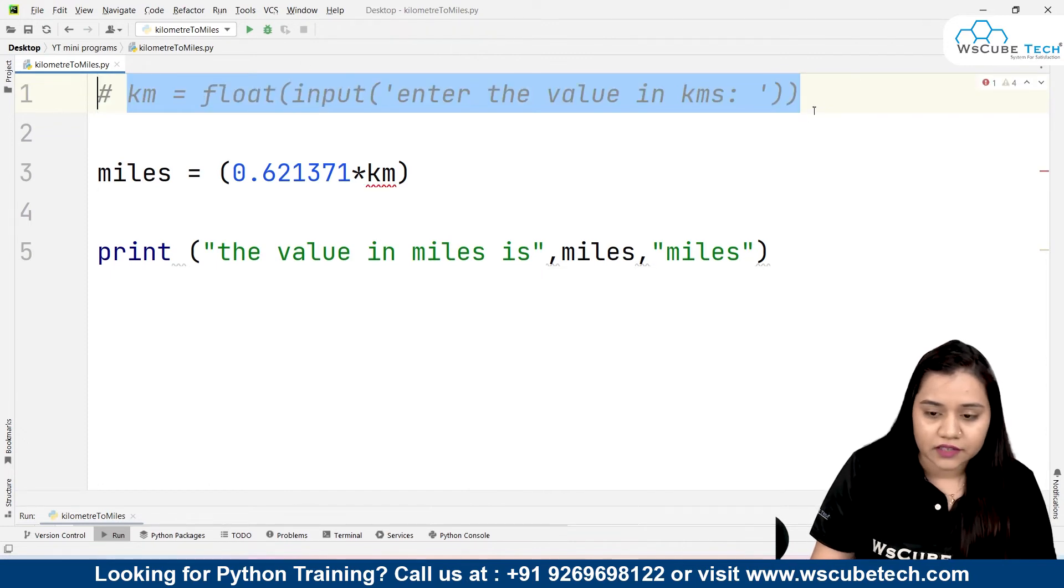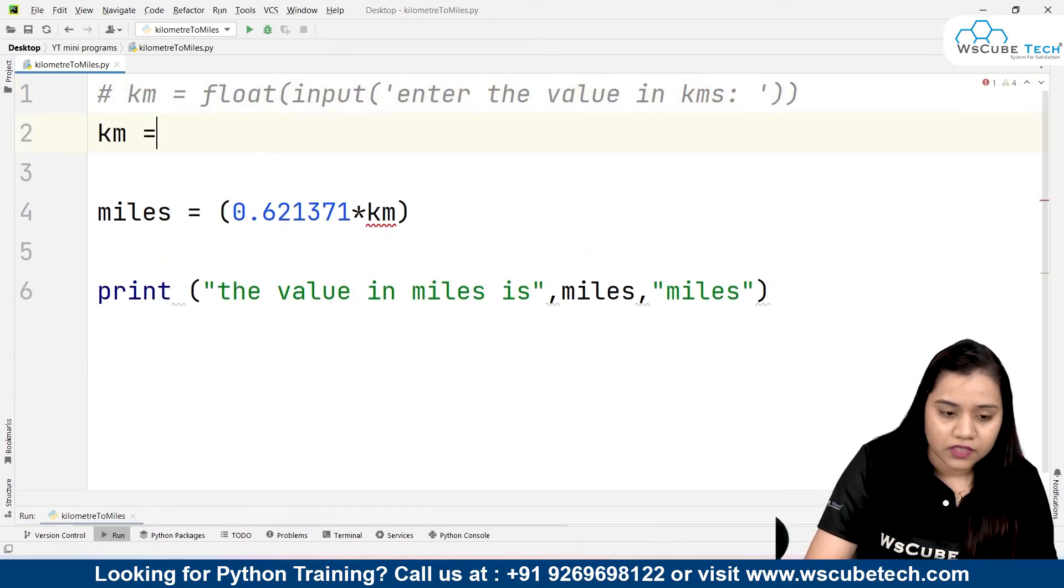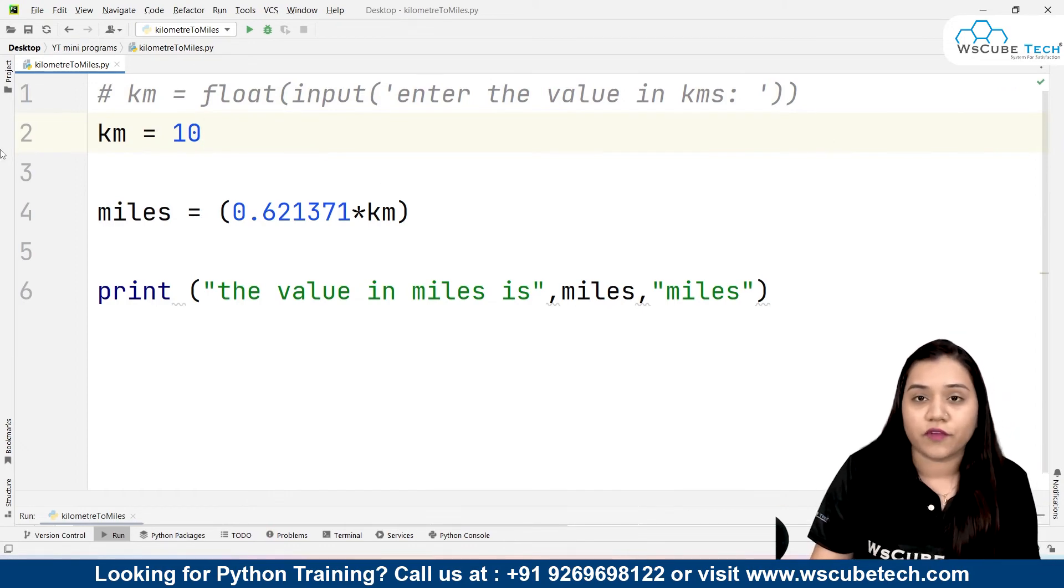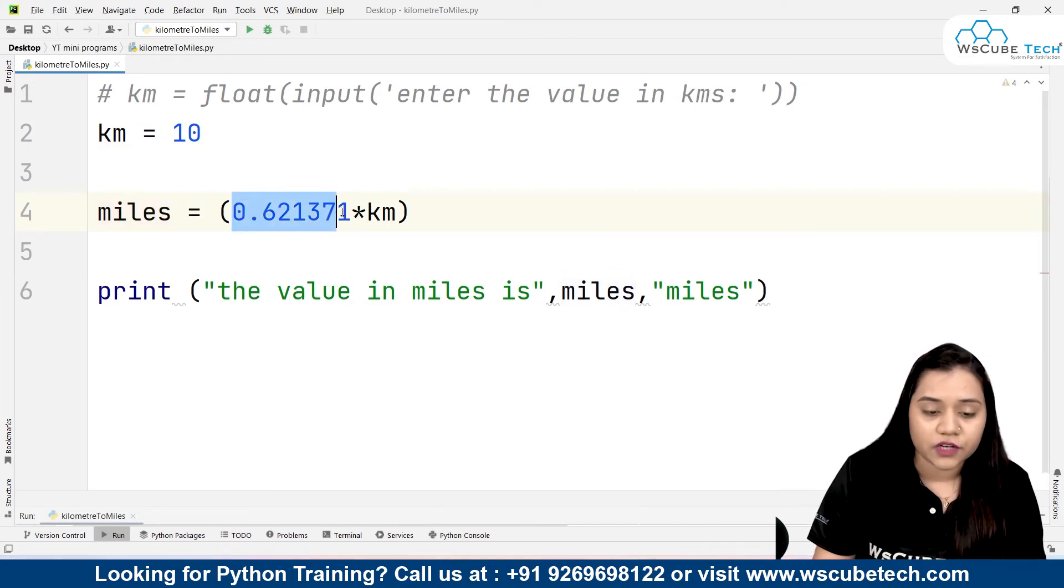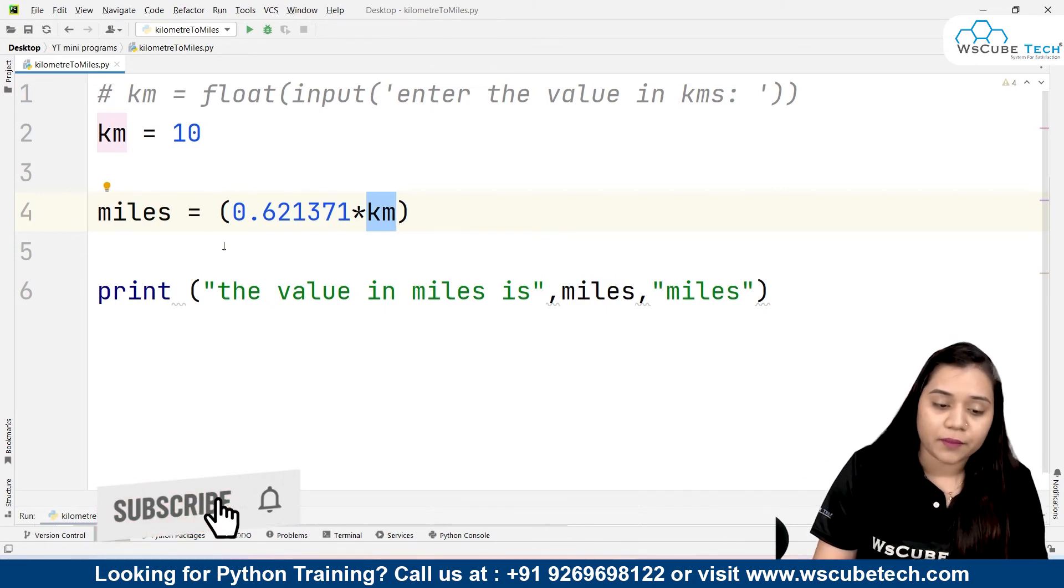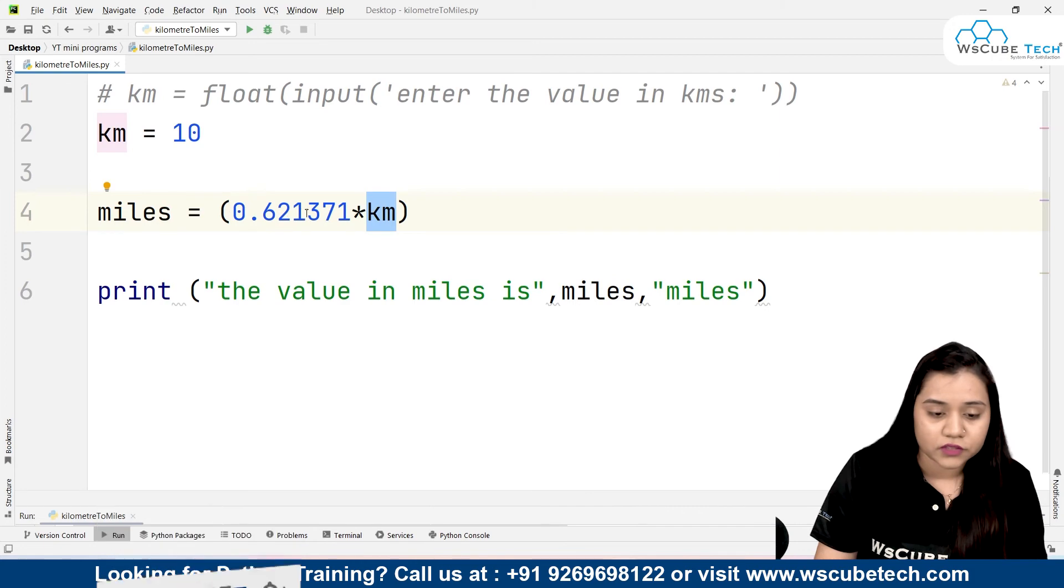You can create a predefined variable over here. Then to convert it into miles, we have created another variable called miles. Miles equals the value that we want to convert, that is kilometer—10 kilometers—multiplied by the formula, which is 0.621371. And lastly, we'll print it out.